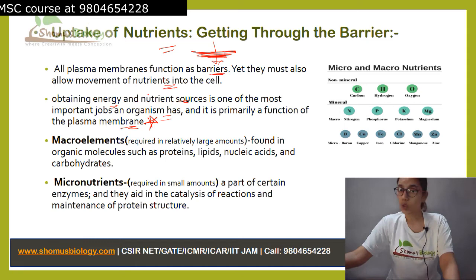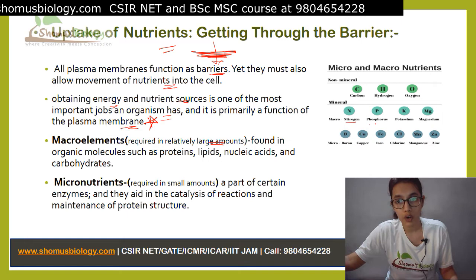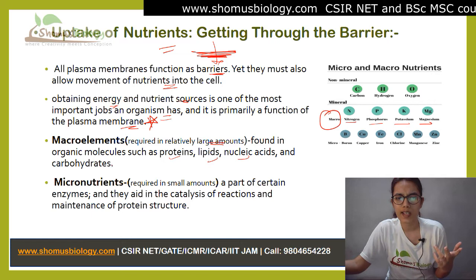This nutrition could be either a macroelement or a micronutrient. Macroelements are minerals required in large amounts — this could be nitrogen, phosphorus, potassium, and magnesium. They are found in proteins, lipids, nucleic acids, and some carbohydrates.